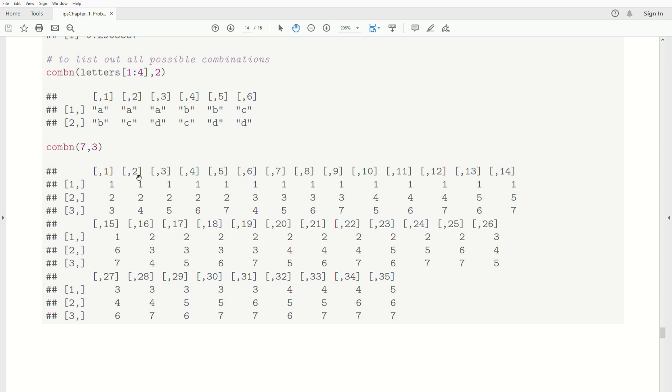So it lists them: 1, 2, 3; 1, 2, 4; 1, 2, 5; 1, 2, 6; 1, 2, 7; 1, 3, 4; 1, 3, 5... Anyway, it goes through all the possibilities. And that can, when you're trying to figure out a problem, be so helpful sometimes just to list the possibilities.